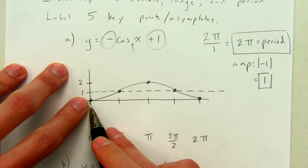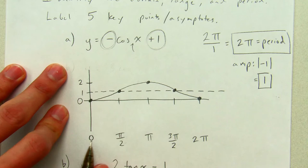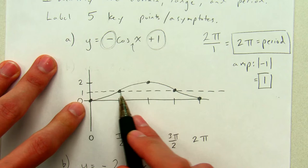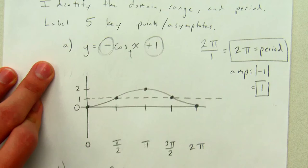This is my graph of y equals negative cosine x. The negative reflected it, so it started down here instead of up here. Plus 1. The plus 1 moved the whole thing vertically up. I've got my x-axis labeled. I've got my y-axis labeled. It would be easier for me to see what each of these points is. I've got my midline drawn as a dotted line.